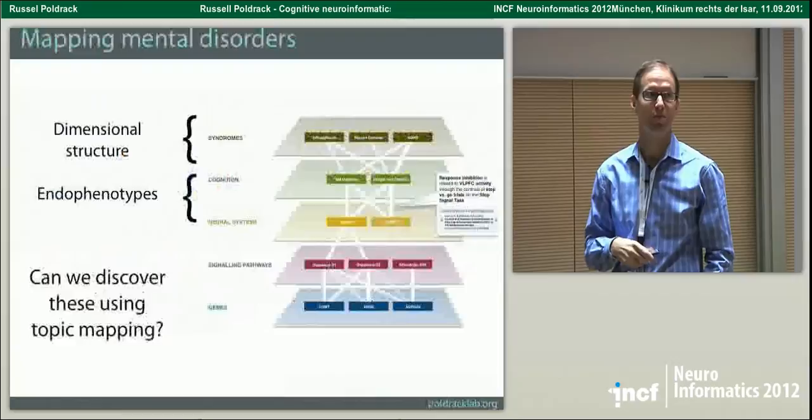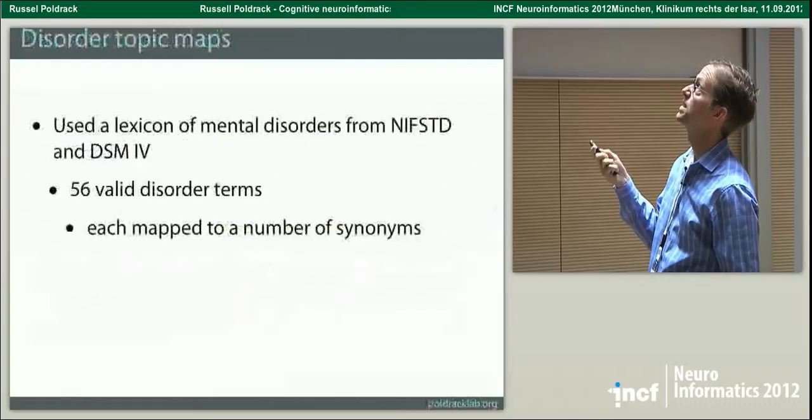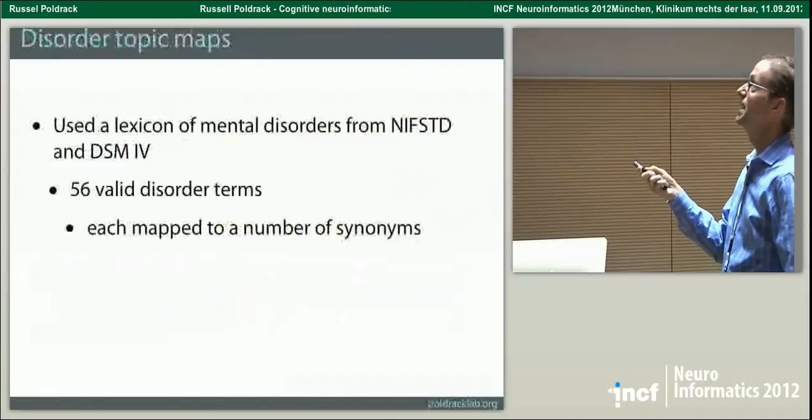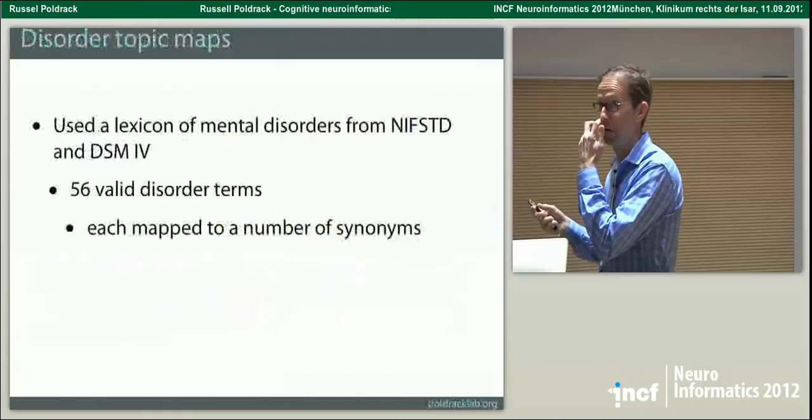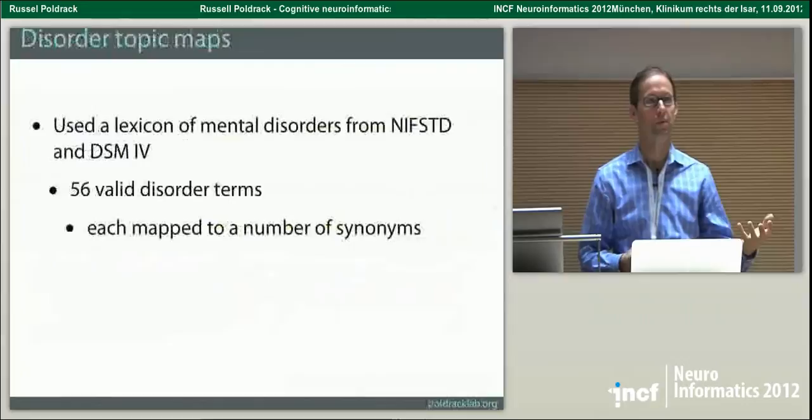Now we get topics much more focused on cognitive stuff. The underscores mean it's a compound term from the atlas. Looking at memory, you get three different memory topics covering different aspects — one about working memory, one about episodic memory, one about semantic memory. Here's one about response inhibition, one about cognitive control. Each maps across a decent number of documents in the corpus, usually less than ten percent of documents loading on any particular cognitive topic.